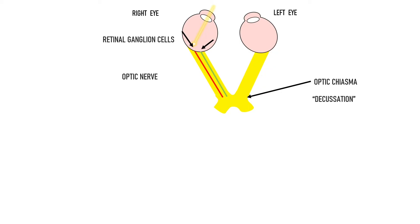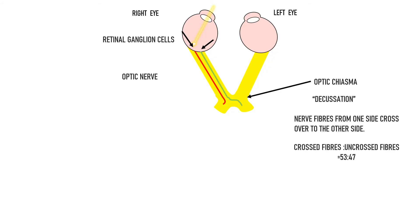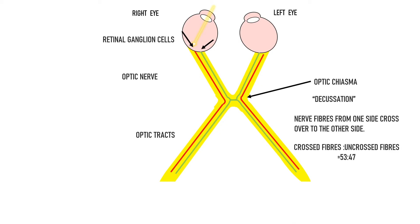Decussation means that nerve fibers from one side cross over to the opposite side. The fibers carrying signals from the nasal half of the retina on the right side cross over to the left side, but the fibers from the temporal half do not cross — they continue on the same side. The ratio of crossed to uncrossed fibers is approximately 53:47. Nasal fibers of the right eye cross over and continue with the temporal fibers of the left eye, and vice versa. They continue as optic tracts. Thus, each optic tract contains ipsilateral temporal fibers and contralateral nasal fibers.